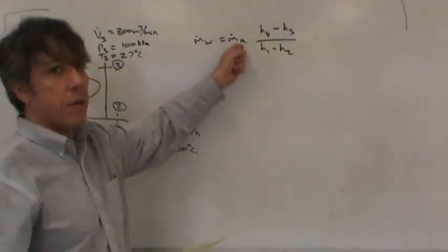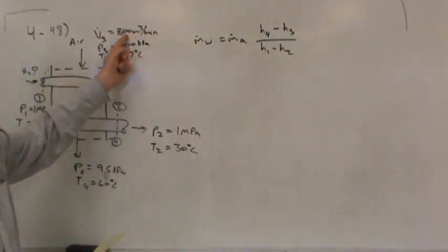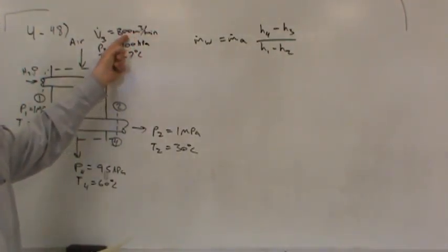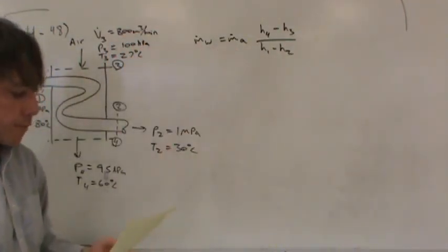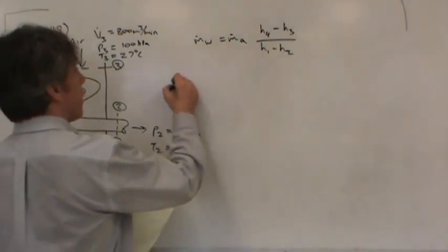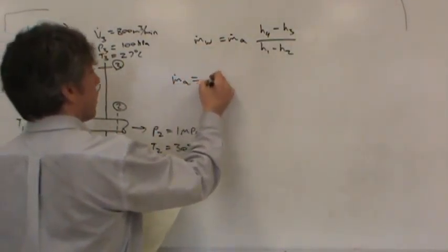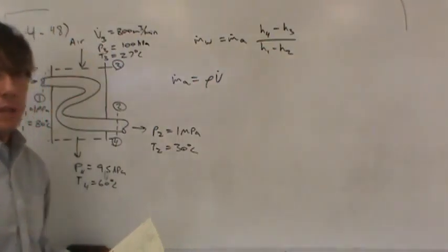So all I really need is the enthalpy changes on the air side and on the water side. And, of course, I need the mass flow rate of the air. Now, I don't have the mass flow rate of the air. I have the volume flow rate. So how will I get the mass flow rate of the air? Well, you might remember the mass flow rate can be related to volume flow rate by density.